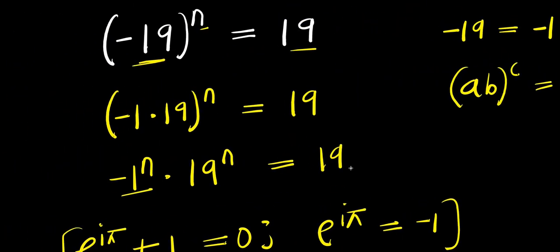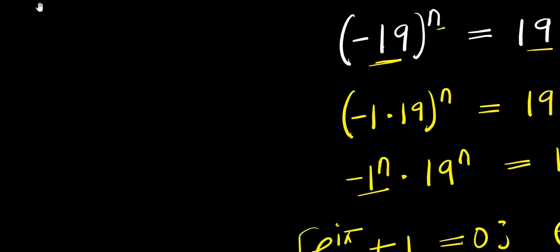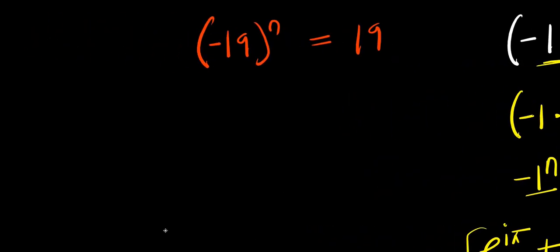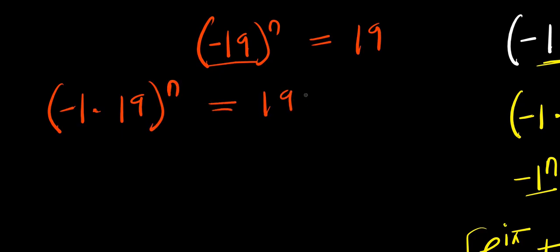Now, the next thing we can do is to consider another method of solving this problem. We have negative 19 to the power of n equals 19. What we do is consider the same setup and replace negative 1 times 19, raised to the power of n, equals 19. Now we consider another identity: recall that the square root of negative 1 is i.